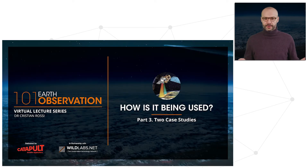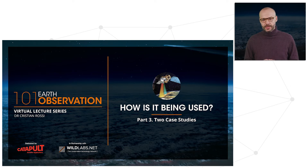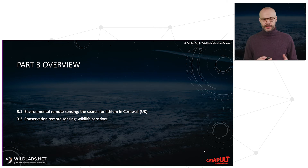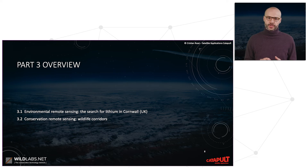The third part of our series is about how remote sensing is being used. We will see specifically two case studies: an environmental remote sensing case study about the search for lithium in the UK in the region of Cornwall, and a conservation remote sensing study about wildlife corridors.